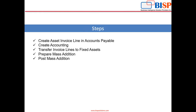These are the steps you have to follow for merge and split asset lines: first, create an asset invoice in Accounts Payables; then create accounting for that invoice; then transfer that invoice line to fixed asset; then run the job Create Mass Addition; then perform Post Mass Addition. Now we will move to our application to see how we can merge and split the asset line.